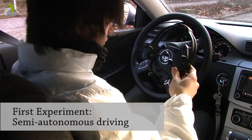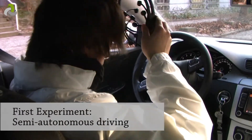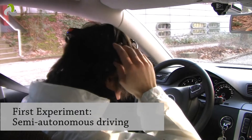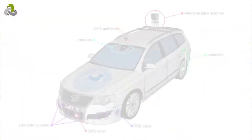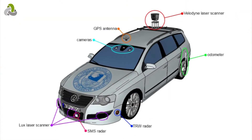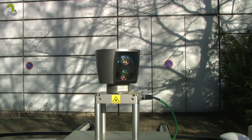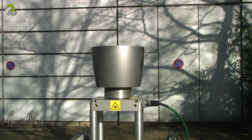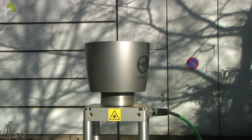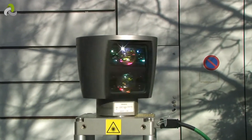In our first experiment, the test subject uses the sensor cap to give commands to our autonomous car. The car is equipped with video cameras, radars, and laser sensors that provide the car with a full three-dimensional view of its surroundings.